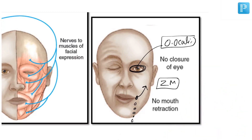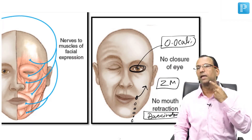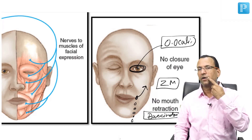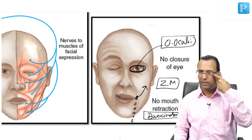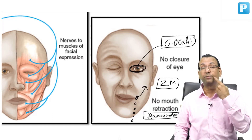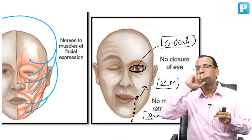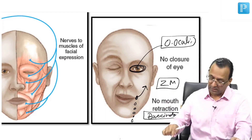There is also dribbling of saliva because the buccinator muscle is paralyzed. Buccinator normally keeps pushing saliva toward the throat, but if buccinator is not working, saliva dribbles out. The patient also needs to use a finger to remove food from the cheek, because food collects there when buccinator is not working — all of these are problems of facial palsy.